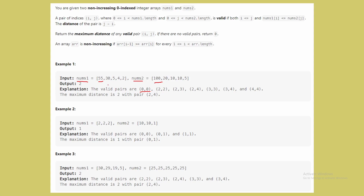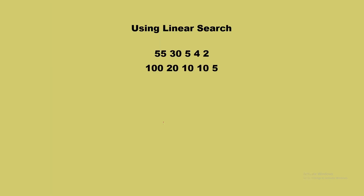Looking at the example, the pair (0,0) is valid, and similarly all highlighted pairs satisfy the given condition. The maximum distance here is two — that means j minus i equals four minus two equals two. Now let's think about how to solve this problem.